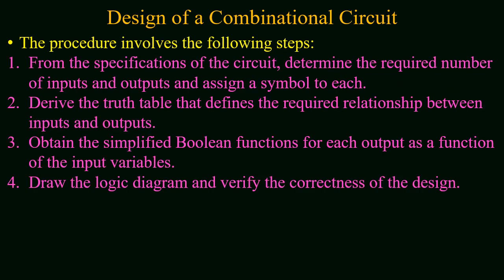The steps involved in the design of a combinational circuit start from the specification of the circuit to determine the required number of inputs and outputs, and assign a symbol or variable to them. In the very first step you have to read the problem statement and identify the requirements of input and output — how many bits will be required for the input and how many bits will be required for the output — and after this identification you must assign variables to the input bits and output.